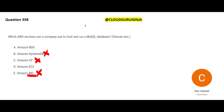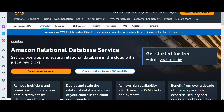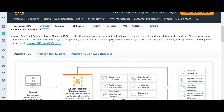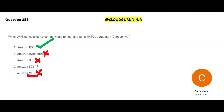So our two answers are RDS and EC2. RDS stands for Relational Database Service — you can fire SQL queries, and it supports MySQL, PostgreSQL, MariaDB, Oracle, and SQL Server. You can also run MySQL on EC2 instances. The difference is that RDS is fully managed — you don't have to worry about installation. On EC2, you take MySQL licenses and software and install it yourself. This is our final answer.